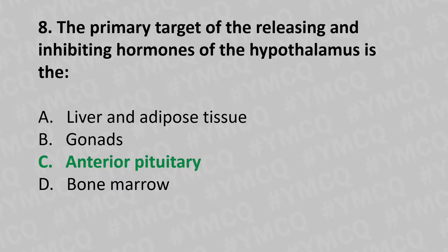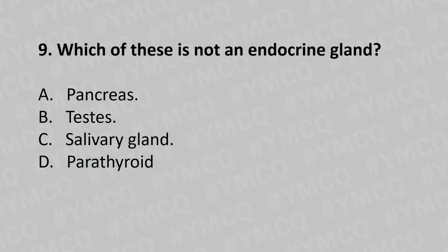Moving to our ninth question. Which of these is NOT an endocrine gland? Option A: pancreas. Option B: testis. Option C: salivary gland. Option D: parathyroid. And the answer is Option C: salivary gland.